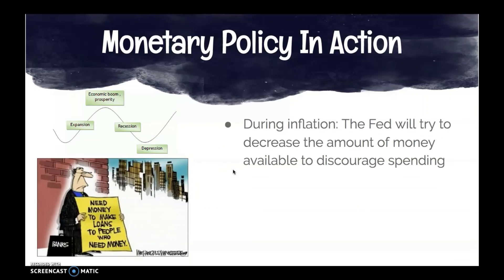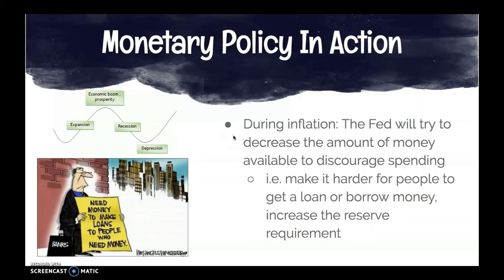On the other side, with contractionary monetary policy during inflation, the Fed tries to decrease the amount of money available to discourage spending. When we're in an economic boom with high inflation, the Fed will raise interest rates and raise the discount rate — those fees banks and individuals pay to take out loans — making it harder to borrow. They'll also increase the reserve requirement. For example, if the requirement goes back to $10,000, the Fed might raise it to $12,000, leaving banks $2,000 less to loan out, decreasing the amount of money in circulation.